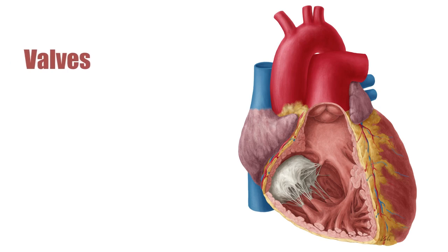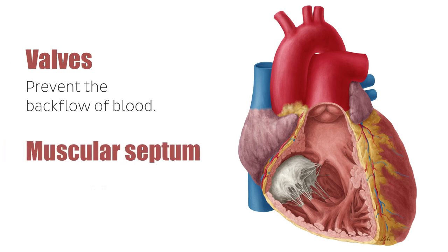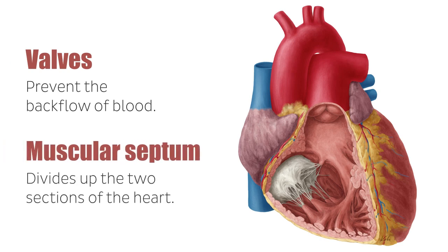The valves in the heart prevent the backflow of blood into the chambers of the heart. The muscular septum divides up the two sections of the heart, creating a left and right side, each containing one atrium and one ventricle. The right side of the heart pumps deoxygenated blood and the left side pumps oxygenated blood.